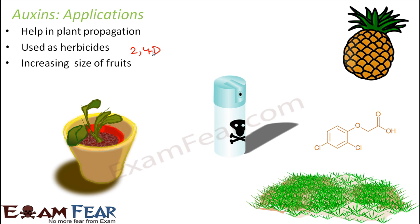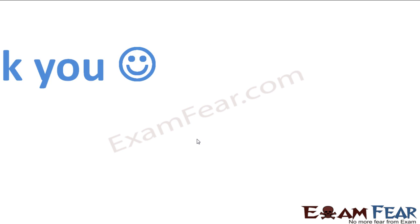Auxin also helps in increasing the size of fruits. Some fruits, for example pineapple, are sometimes bigger than their normal size. That is because of the application of synthetic auxins. Some people say we should not eat oversized fruits because they contain a lot of chemicals, and that is true to some extent — when synthetic chemicals are added externally, too much application is of course not good for our health. So these were some of the important applications of auxin, and with this we'll end. Thank you.